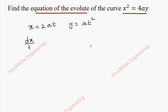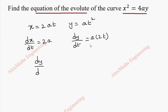From this, we can find dx/dt which is 2a, and dy/dt is a into 2t. So now dy/dx is a into 2t divided by 2a. After cancelling, we get dy/dx equal to t.